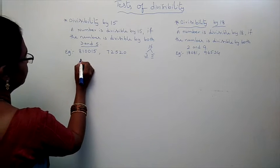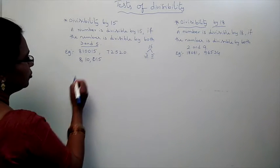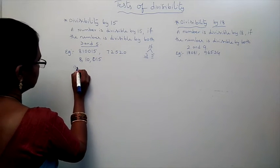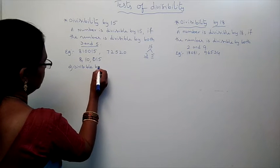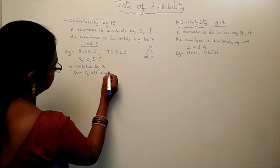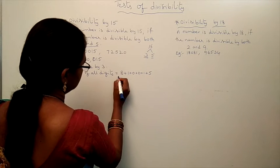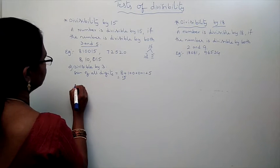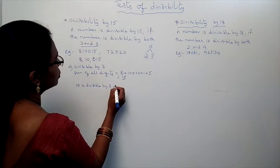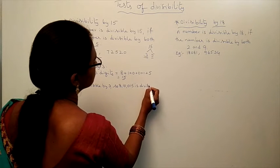Example 1: 8,10,050. First, we have to check divisibility by 3. The sum of all digits is equal to 8 plus 1 plus 0 plus 0 plus 5, which is equal to 15. Now, 15 is a multiple of 3, so 3 goes into 15. Therefore, 8,10,050 is divisible by 3.